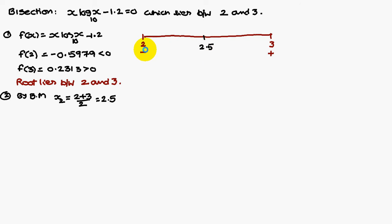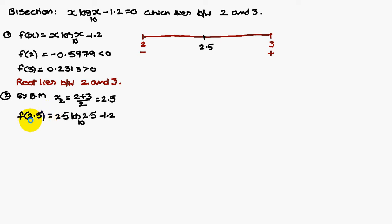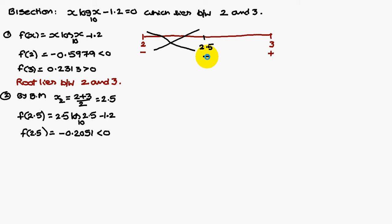So 2.5 lies in between 2 and 3. Now our aim is to determine whether the root lies between 2 and 2.5 or between 2.5 and 3. To determine that, we need to get the sign of f(2.5). In the given equation, we replace x with 2.5, which gives us minus 1.2. If you simplify, you get minus 0.2051, which is a negative value. Always the root lies between 2 consecutive opposite signs. Therefore, the root lies between 2.5 and 3.